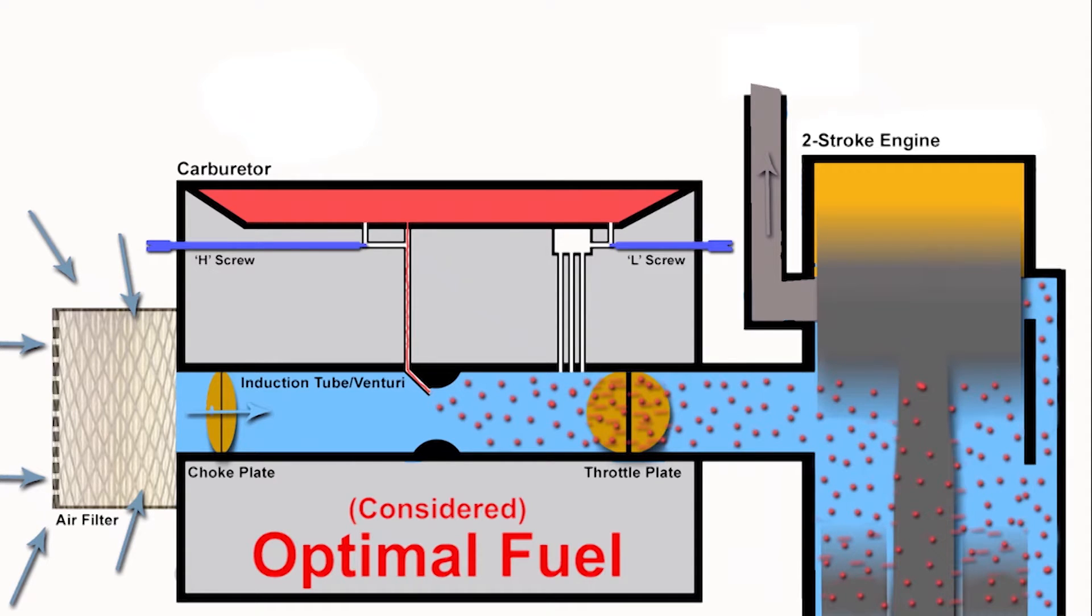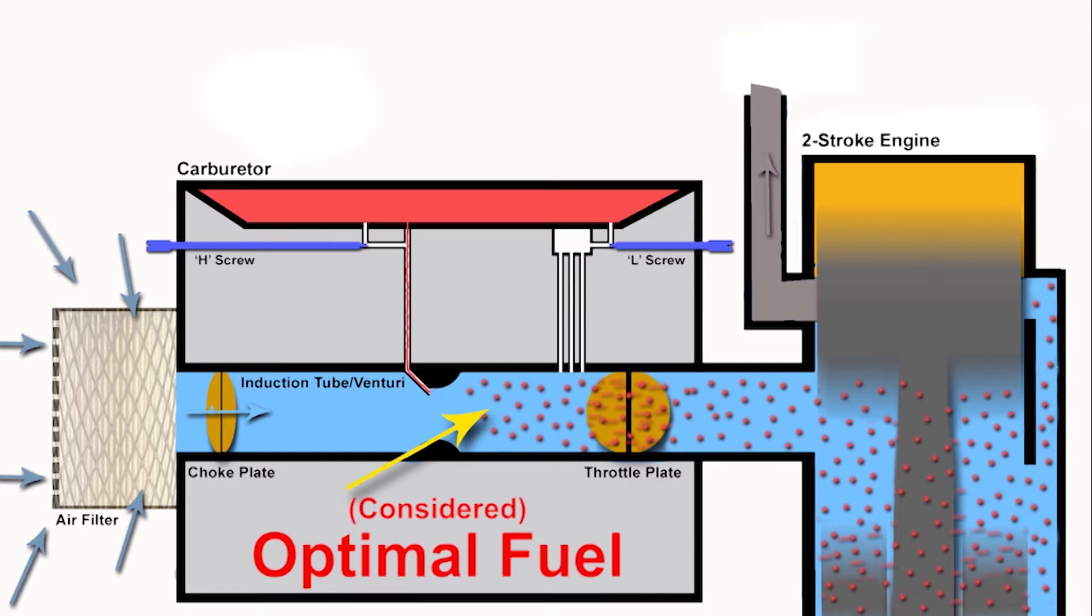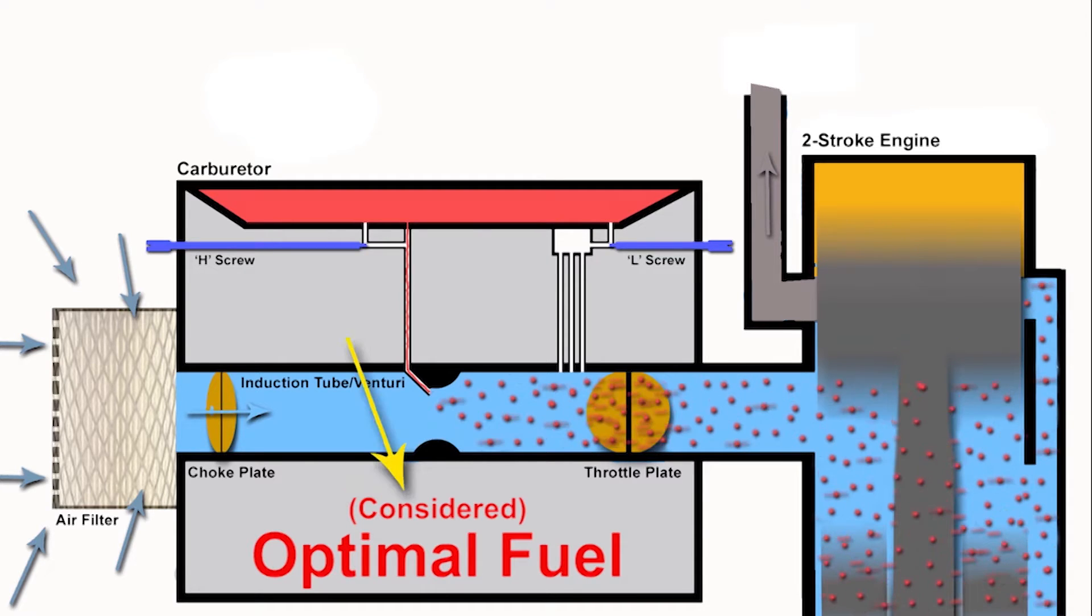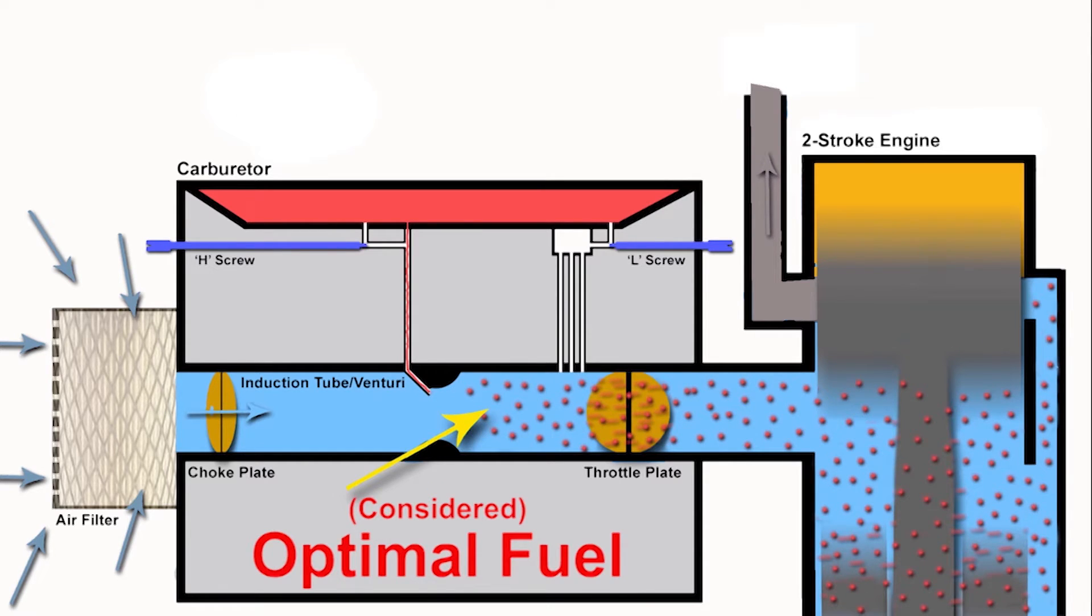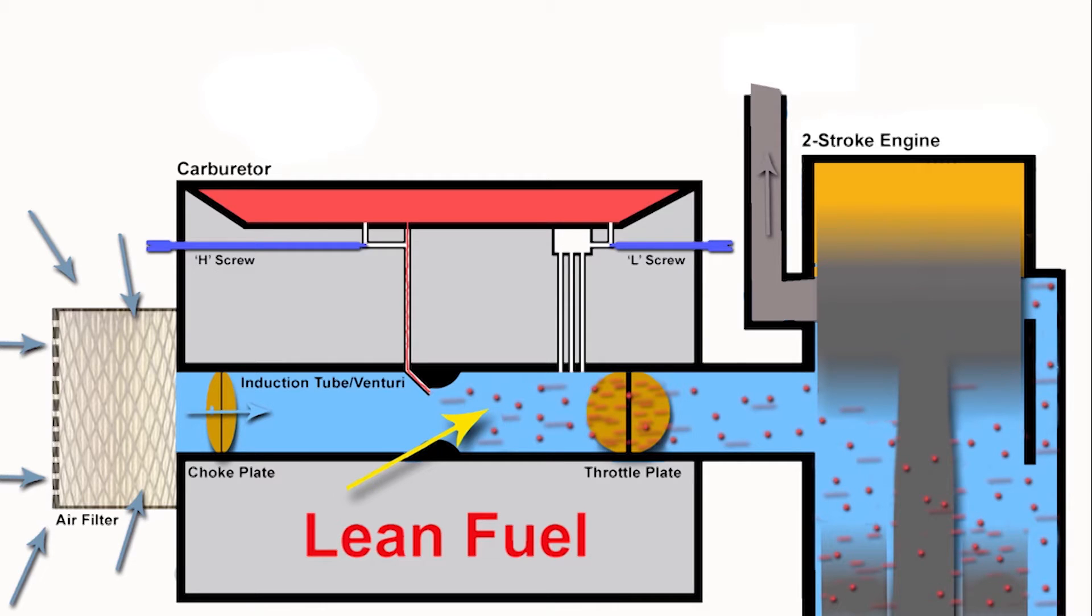What you'll tend to find is instead of the engine revs lowering, they actually start to increase to the point where the engine seems to have far more power. Why did removing some of this fuel make the engine run much harder and faster? The considered optimal amount of air and fuel to run the engine isn't actually the most ideal ratio for the most efficient combustion possible within the engine.